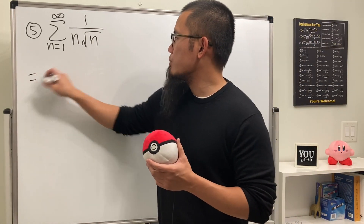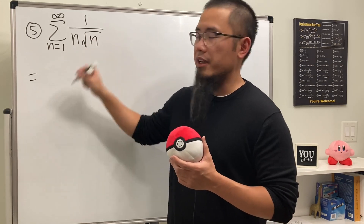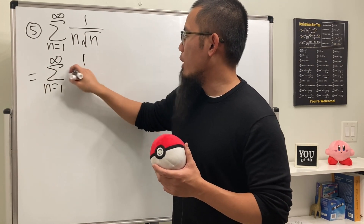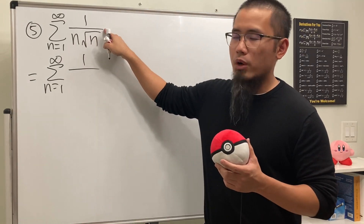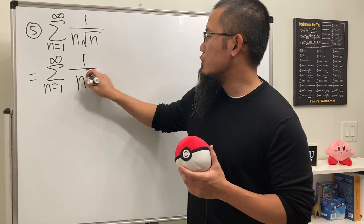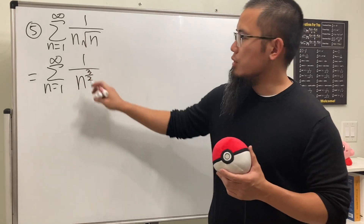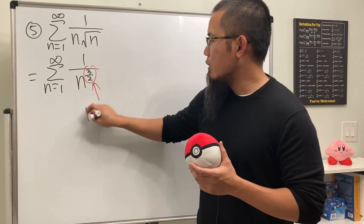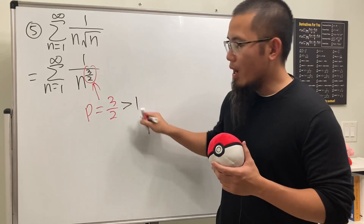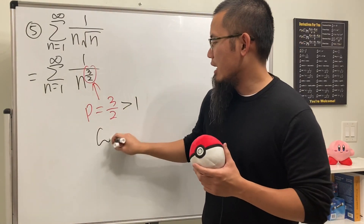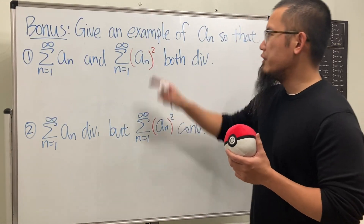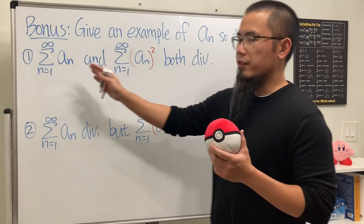For the fifth one, we multiply the terms together. The series as n goes from one to infinity has one over n to the one-half power times n to the first power. Adding the exponents gives n to the three-over-two power. Here p is three-over-two, which is greater than one, so this series converges.